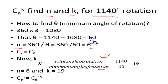Total angle of rotation is 1140 and minimum angle of rotation theta is 60. And when you divide you will get the value of 19. So N is equal to 6 and K is equal to 19. Now C n K will be C 6 19. That means rotation by 60 degree and performing 19 operation will give this 1140 degree rotations.